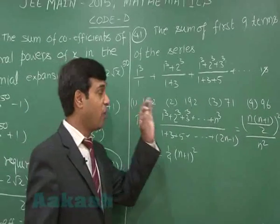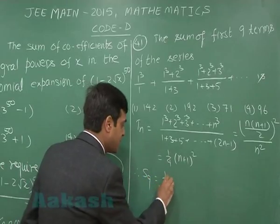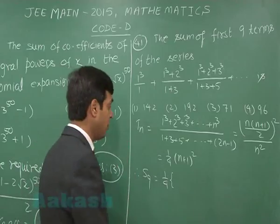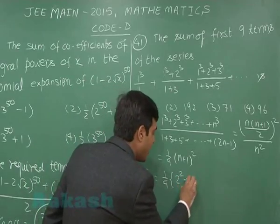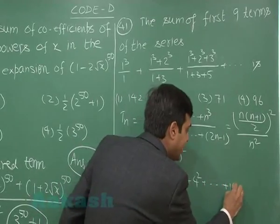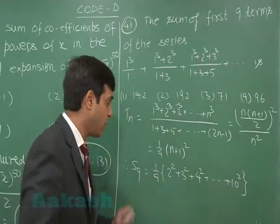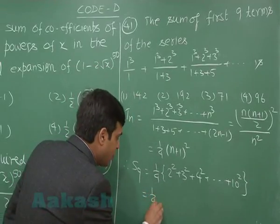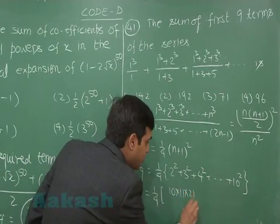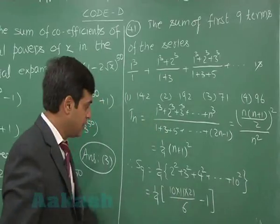The question is talking about sum of first 9 terms. Therefore sum of first 9 terms is 1/4 times, when you put 1, 2, 3, 4, you get 2², 3², 4² up to 10². If I add and subtract 1², I get (1/4)[10 × 11 × 21/6 - 1], correct?